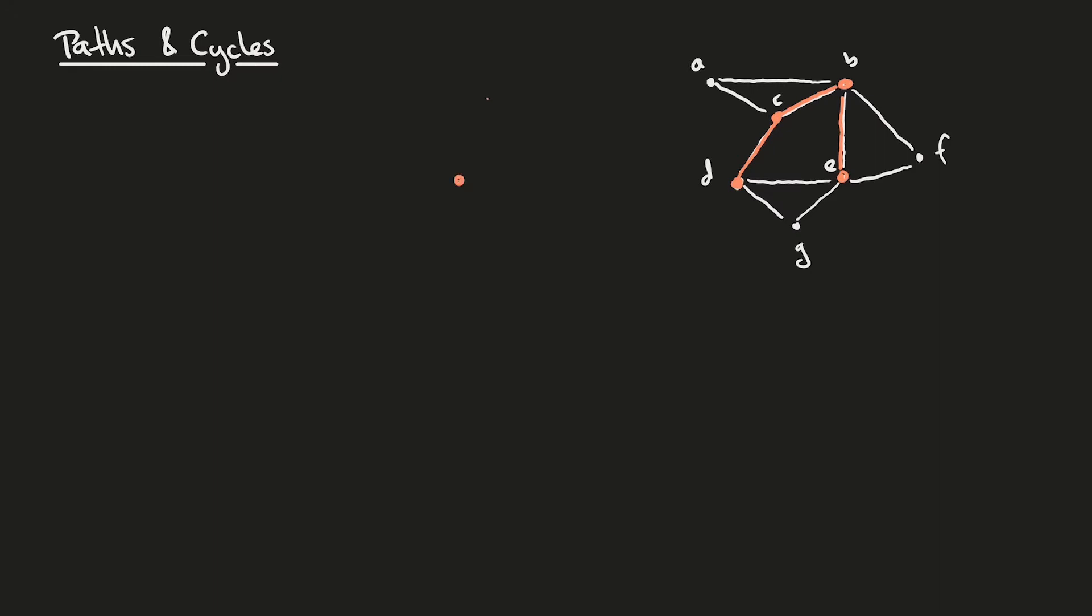This procedure gives us a path through the graph. In this case, we can isolate the path as a subgraph. So we have D, C, B, and E.